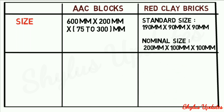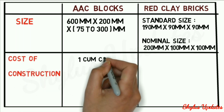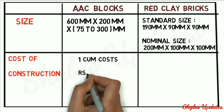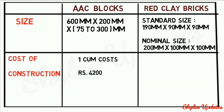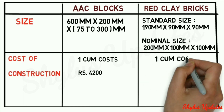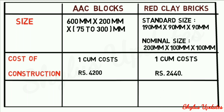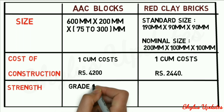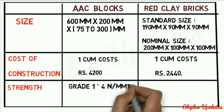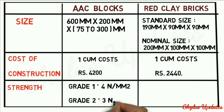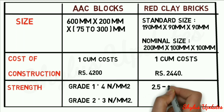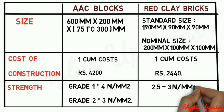Cost of construction: 1 cubic meter of AAC blocks costs Rs. 4,200. Compressive strength of AAC blocks: Grade 1 — 4 N per mm², Grade 2 — 3 N per mm². Compressive strength of red clay bricks: 2.5 to 3 N per mm².